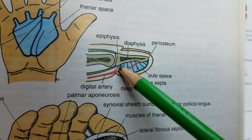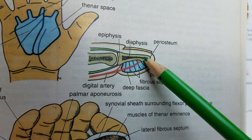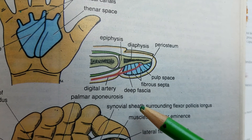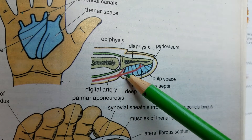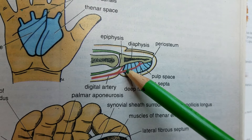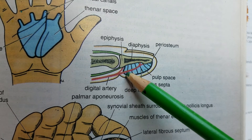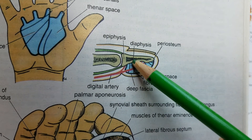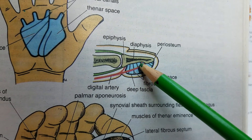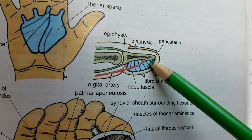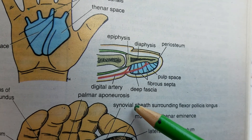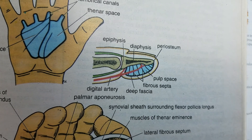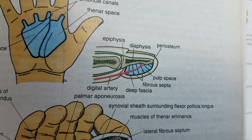This space created by the deep fascia is known as the pulp space. Various septa from the deep fascia enter into the pulp space and attach to the periosteum of the distal phalanx. These septa convert the pulp space into further sub-compartments, which are all filled with fat and loose connective tissue.